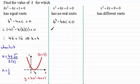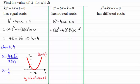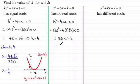Taking a to be 1, b to be 6, and c to be k, we have 6 squared minus 4 times 1 times k, and that has got to be less than 0. So 36 minus 4k is less than 0. Add 4k to both sides: 36 is less than 4k. Divide both sides by 4: 9 is less than k, or equivalently k must be greater than 9.